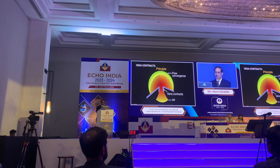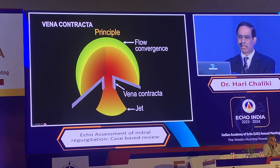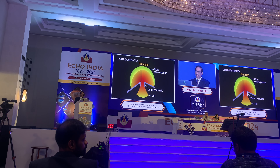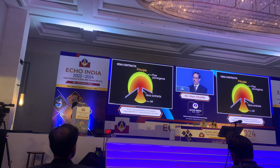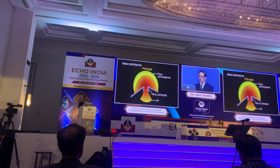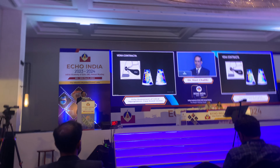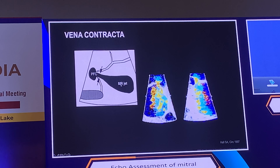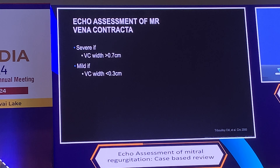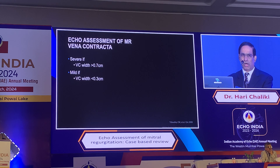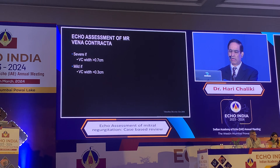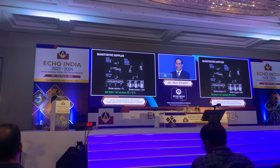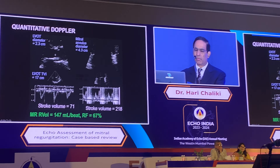Vena contracta is one such principle. When the jet accelerates towards the orifice there is a proximal flow convergence region, and the narrow portion of that jet is called the vena contracta. The vena contracta width has been correlated with quantitative Doppler — in fact by my colleague Dr. Serrano in Rochester. If it is more than 0.7 cm it is considered severe; mild is less than 0.3 cm.